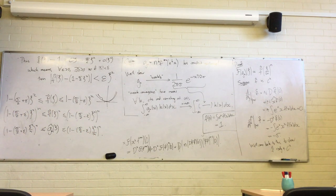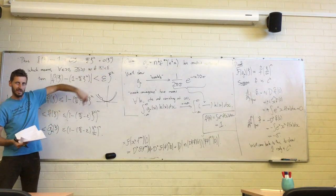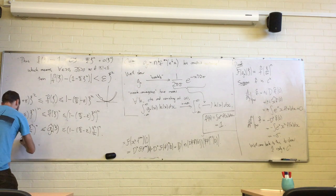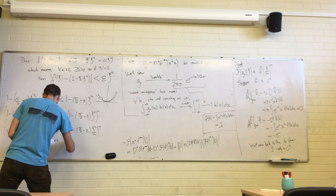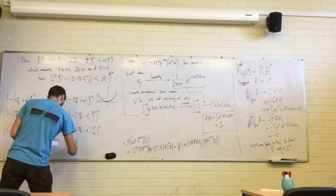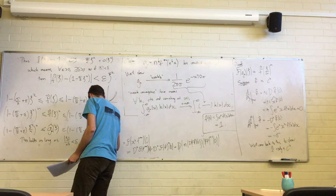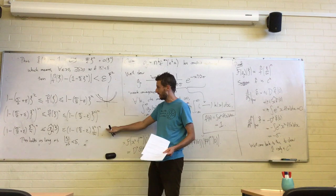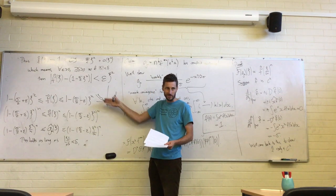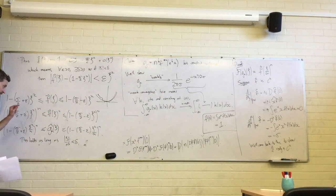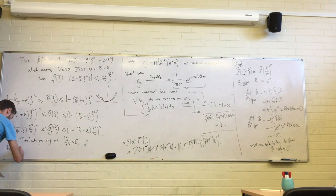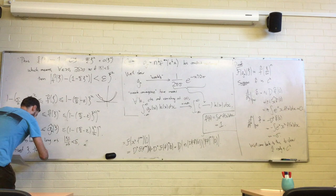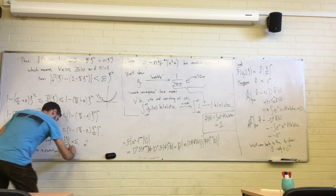Now, since we've introduced the sqrt(n) rescaling, we substitute xi/sqrt(n) in place of xi. This holds as long as xi/sqrt(n) is less than delta. For any fixed xi, this is eventually true as n gets large enough.